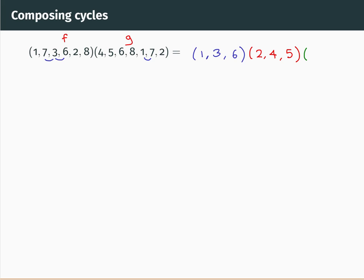What number have we not yet seen? We've not yet seen a seven, so let's take a seven. G sends seven to two and F sends two to eight. G sends eight to one and then F sends one to seven. So we've gone round in a cycle again. We can close this one off.